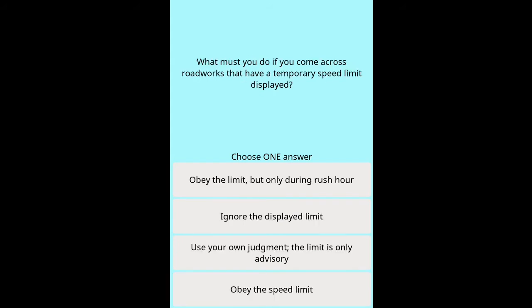Question: What must you do if you come across roadworks that have a temporary speed limit displayed? Options: obey the limit but only during rush hour, ignore the displayed limit, use your own judgement as the limit is only advisory, obey the speed limit.